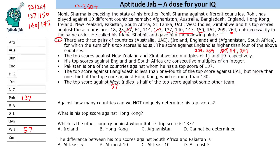We are given that the score against England is higher than four of the above six countries. Looking at the six scores in the pairs, the second highest is 150. So England must be 150. England is paired with Ireland, so Ireland will be 137.